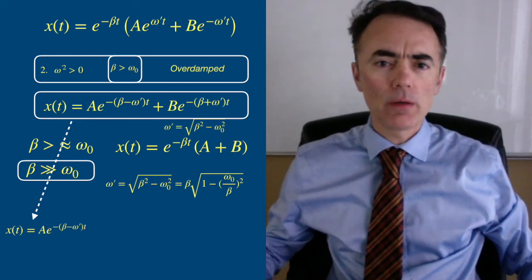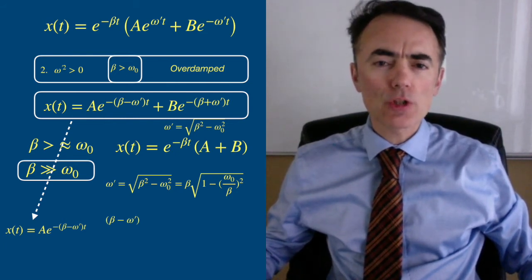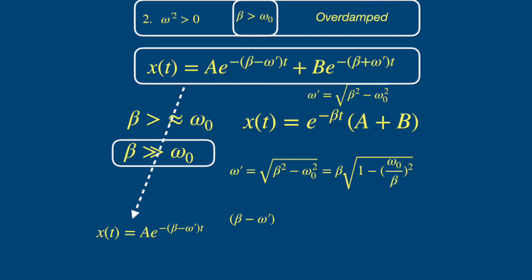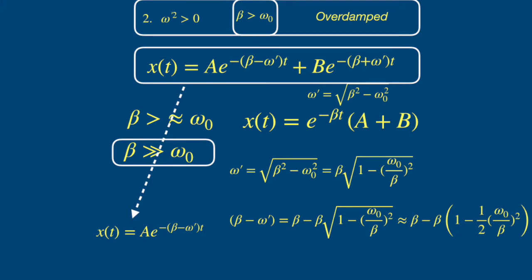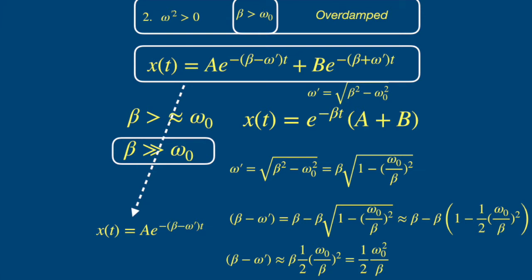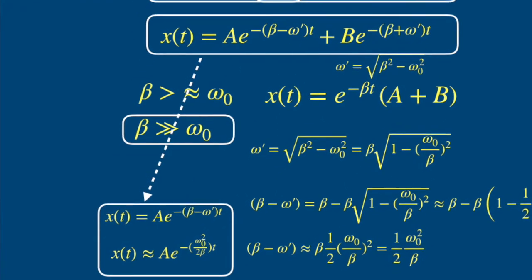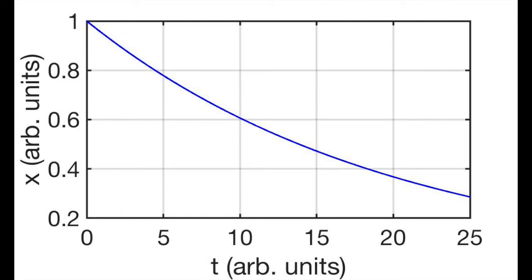Let's rewrite the exponent of the first term, taking beta out of the square root and using the fact that beta is much larger than omega naught. So the exponential behavior goes as e to the negative omega naught squared over 2 beta t. Because beta is much larger than omega naught, this is a slow decay. The spring slowly goes back to the origin.